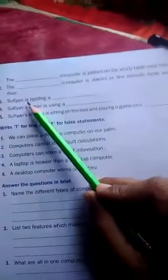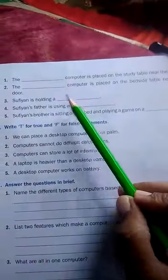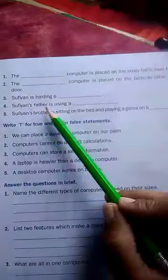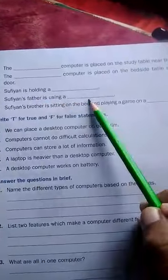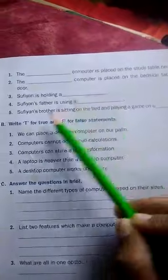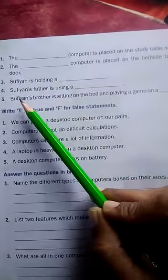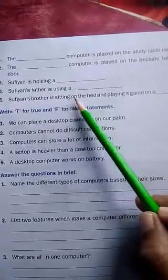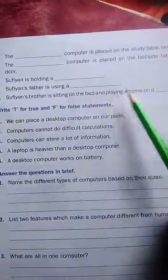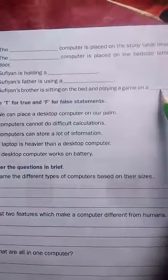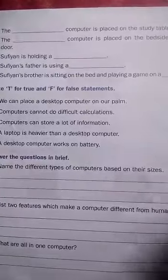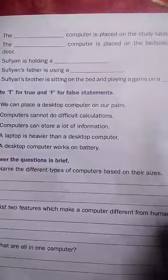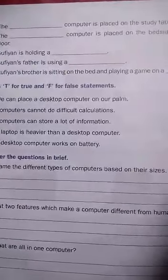Third blank: Sufyan is holding a dash — that is the smartphone. Fourth blank: Sufyan's father is using a dash — that is the laptop. Fifth blank: Sufyan's brother is sitting on the bed and playing a game on a dash — you can fill in that blank.